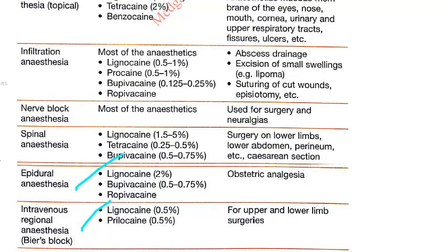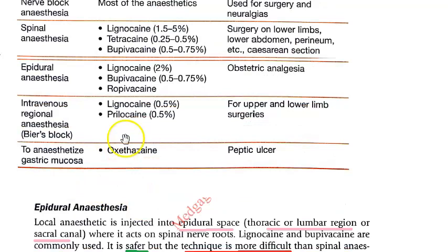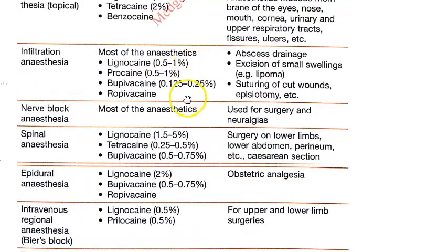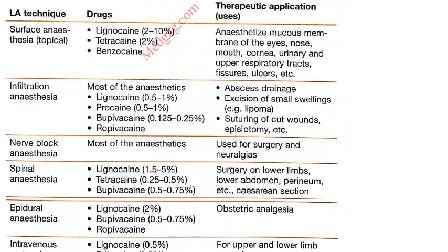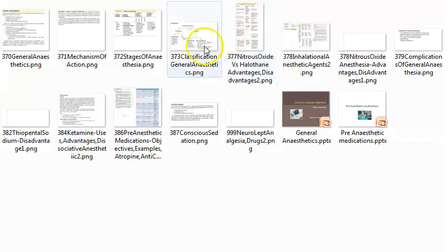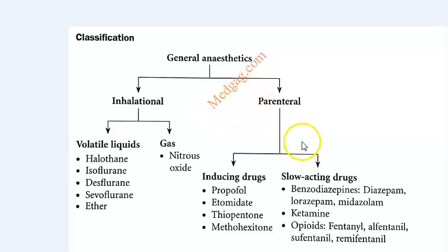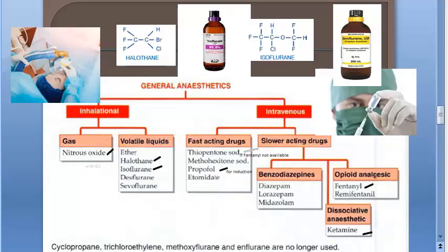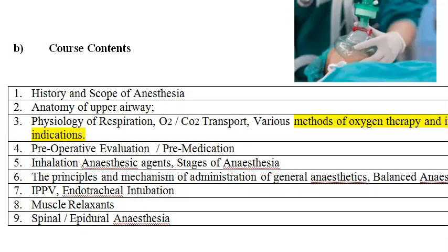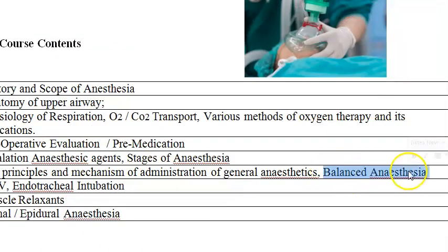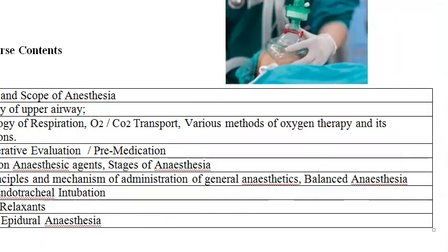Other than local techniques, you have general anesthesia with routes of administration including inhalational and IV. There is a terminology here — balanced anesthesia — which means that instead of giving a single agent at a large dose, it is better to give two or more agents in smaller doses.